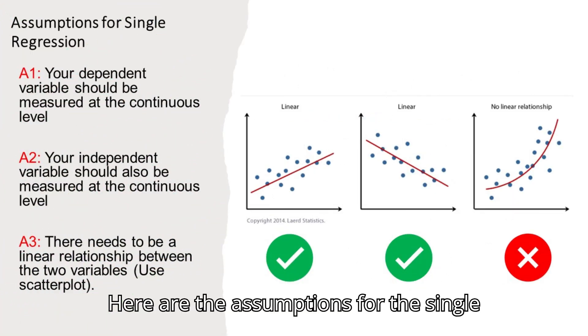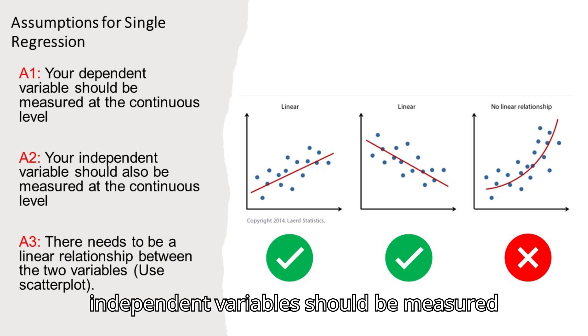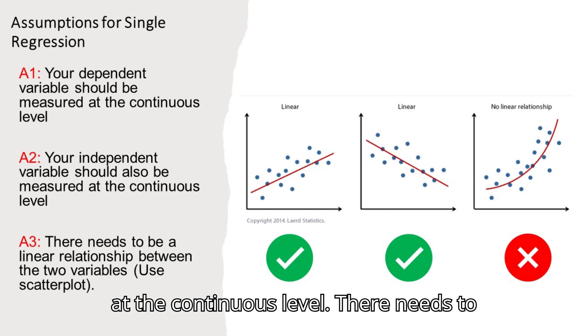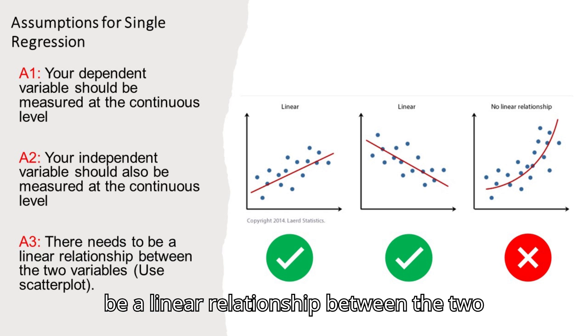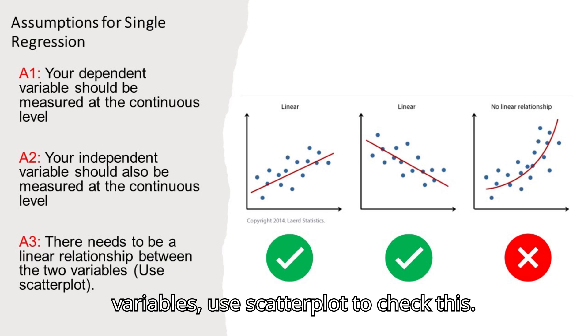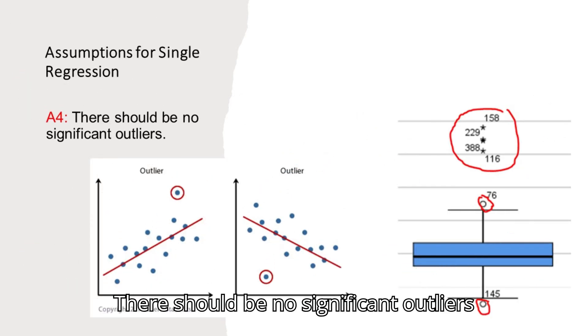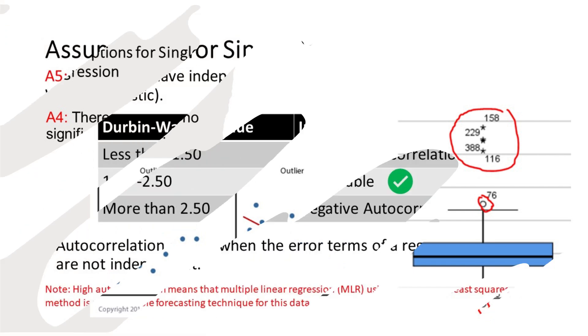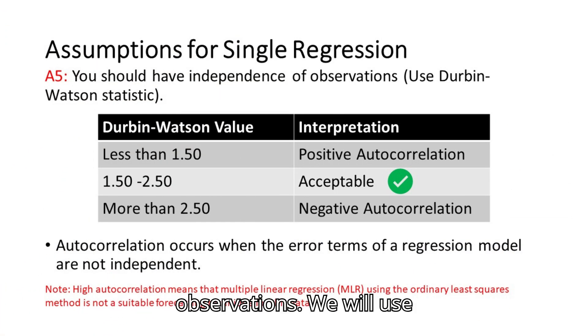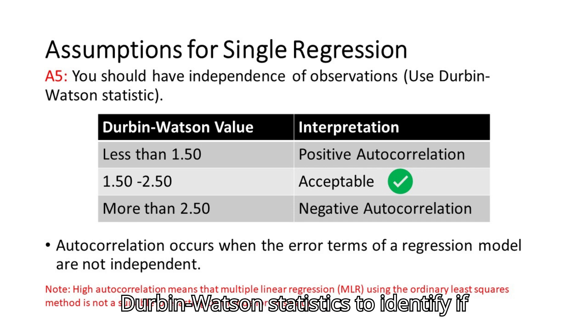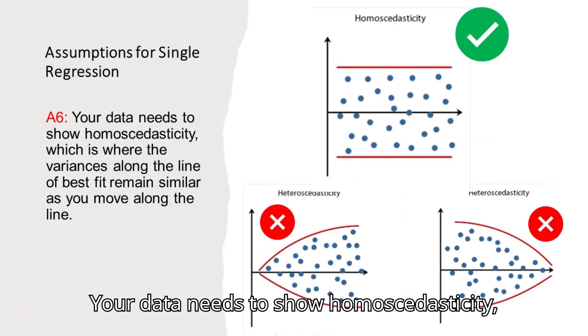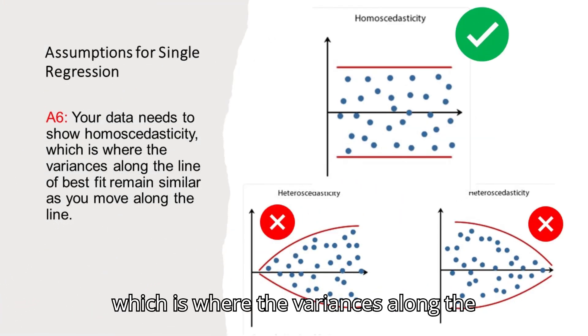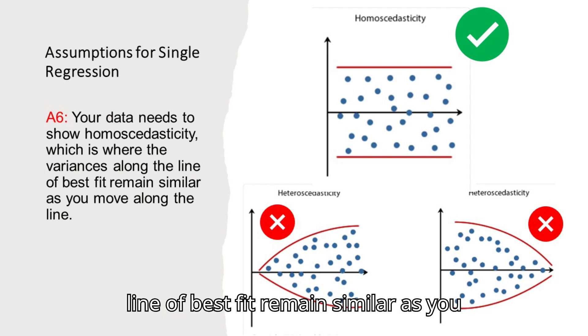Here are the assumptions for the single regression. Your dependent and independent variables should be measured at the continuous level. There needs to be a linear relationship between the two variables, use scatterplot to check this. There should be no significant outliers for each data set. You can use a scatterplot or boxplot to identify outliers. There should be no autocorrelation in the observations. We will use Durbin-Watson statistics to identify if the value is in the acceptable range. Your data needs to show homoscedasticity, which is where the variances along the line of best fit remain similar as you move along the line.